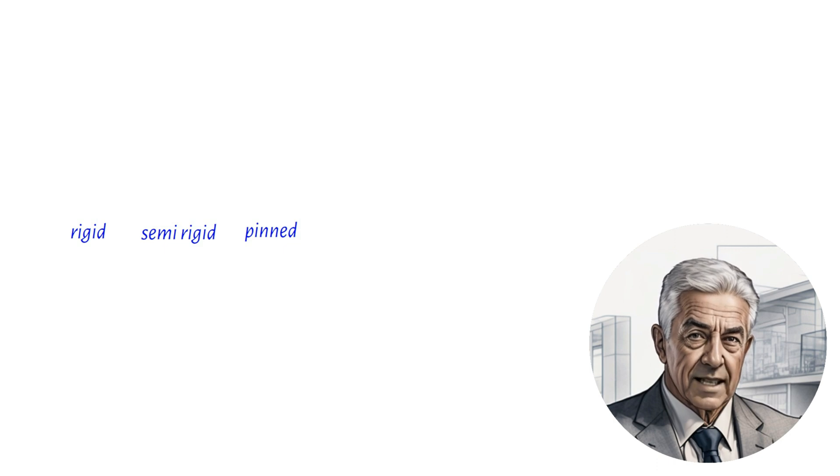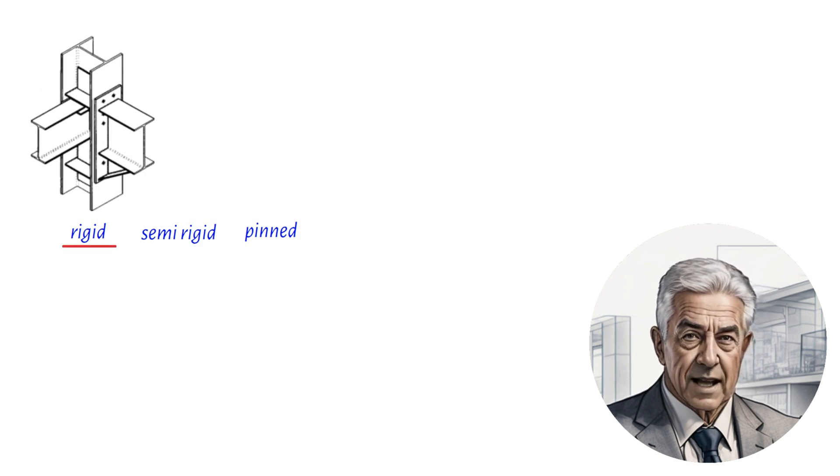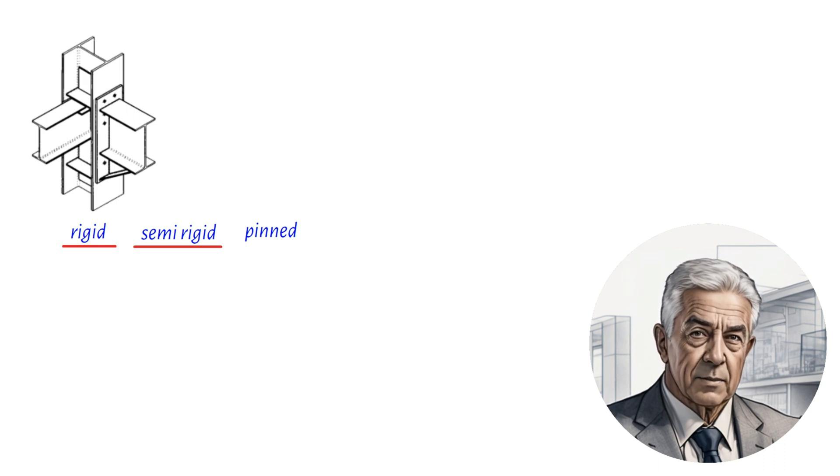So what exactly is a rigid connection? Well, a rigid connection is incredibly stiff, and its flexibility doesn't significantly affect the bending moment diagram of the structure. On the other hand, a semi-rigid connection is more flexible than a rigid connection, but still not as flexible as a pinned connection. As you might imagine, the behavior of a semi-rigid connection must be considered during the analysis of the structure.